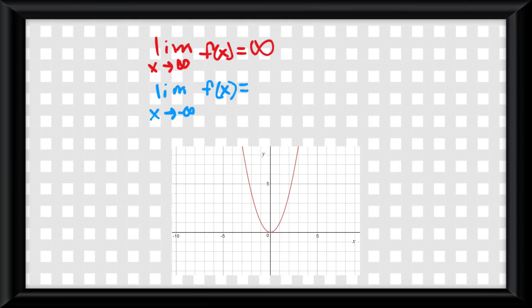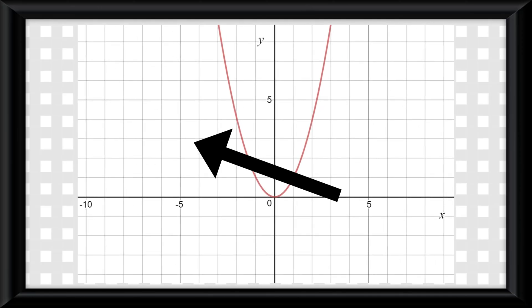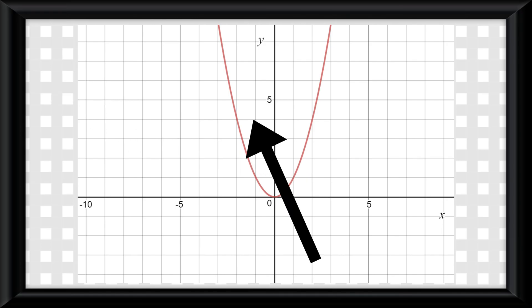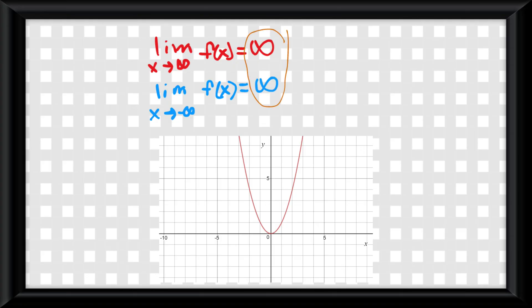Now what is f of x or y doing when x approaches negative infinity? You'll see y increases without bound toward positive infinity. This means that our answers would be positive infinity. And this right here is the end behavior for this graph.